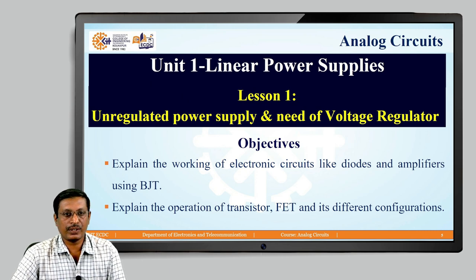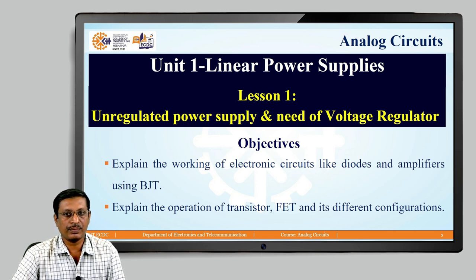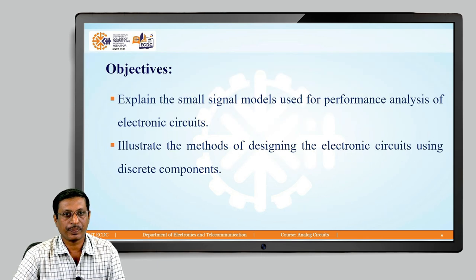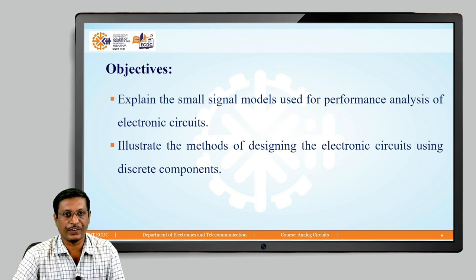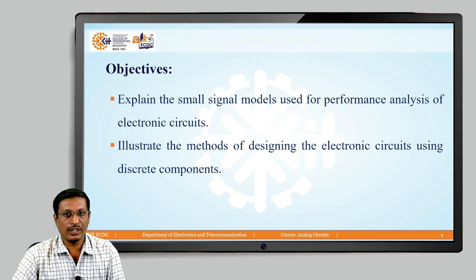The objectives of the course include: working of different electronic circuits like diodes and amplifiers using BJT; working of a transistor and field effect transistor in different configurations; small signal model analysis and performance analysis of BJT and FET; and different methods required to design electronic circuits such as amplifiers using discrete components.